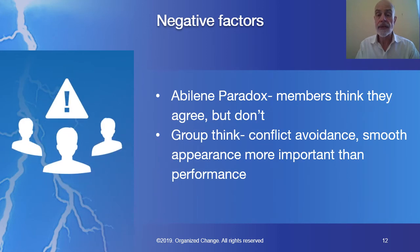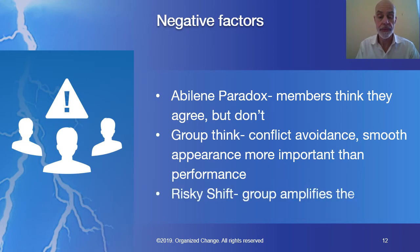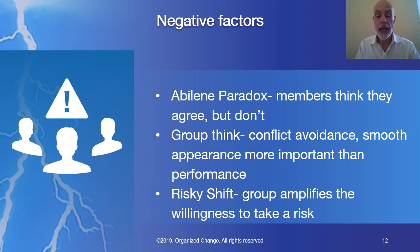Other negative factors include the Abilene paradox, where members think they agree but don't; groupthink, where conflict avoidance and smooth appearance are more important than performance; and lastly, there can be a risky shift, where the group amplifies the willingness of an individual to take risks.